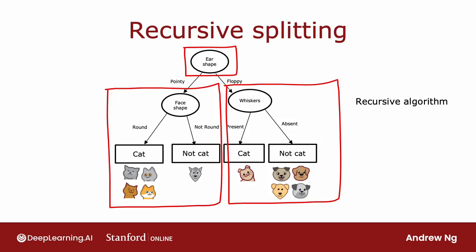In theory, you could use cross-validation to pick parameters like the maximum depth, trying out different values and picking what works best on the cross-validation set, though in practice open source libraries have even better ways to choose this parameter. Another criteria to decide when to stop splitting is if the information gain from an additional split is less than a certain threshold — if any feature achieves only a small reduction in entropy or very small information gain, you might decide not to bother. You can also stop splitting when the number of examples in a node is below a certain threshold.